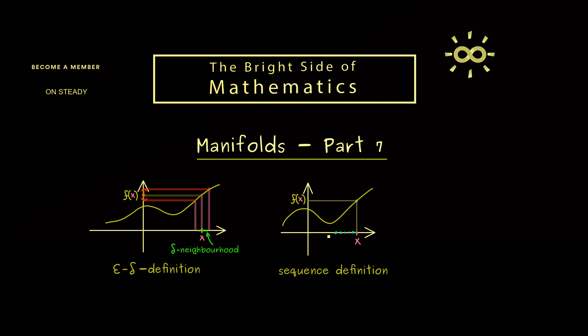However, now this implies that we get also on the y-axis a sequence given by the images of this sequence. And now if this sequence also converges to the limit f of x, to the image of x, then we say that the function is continuous at the point x.